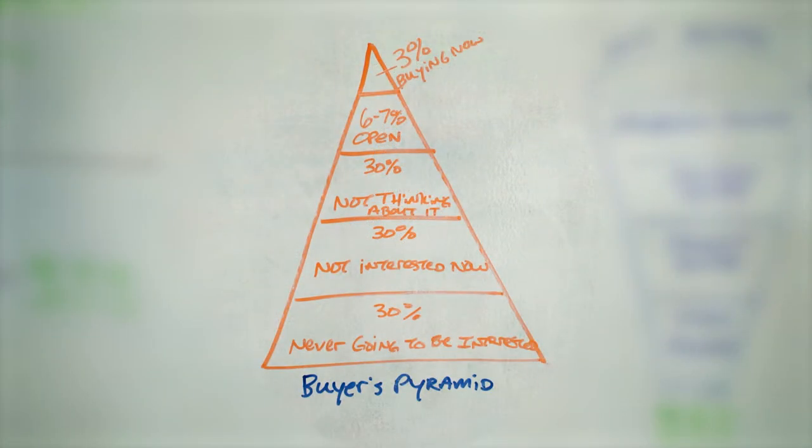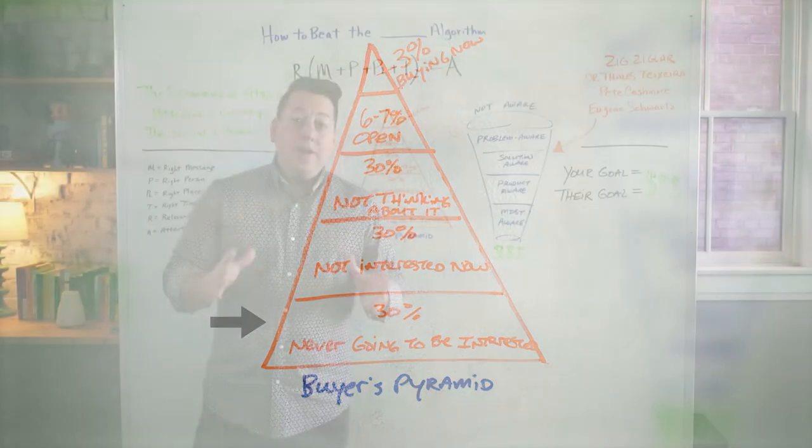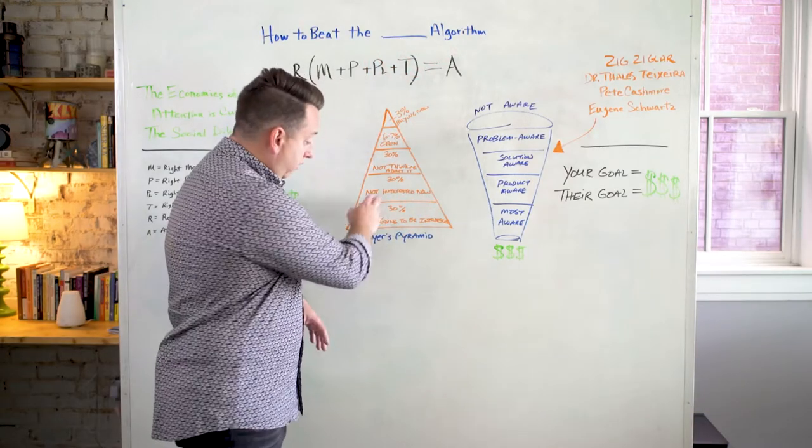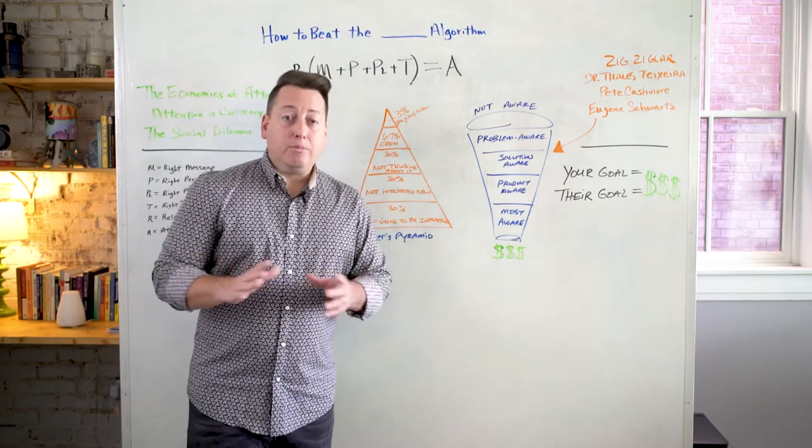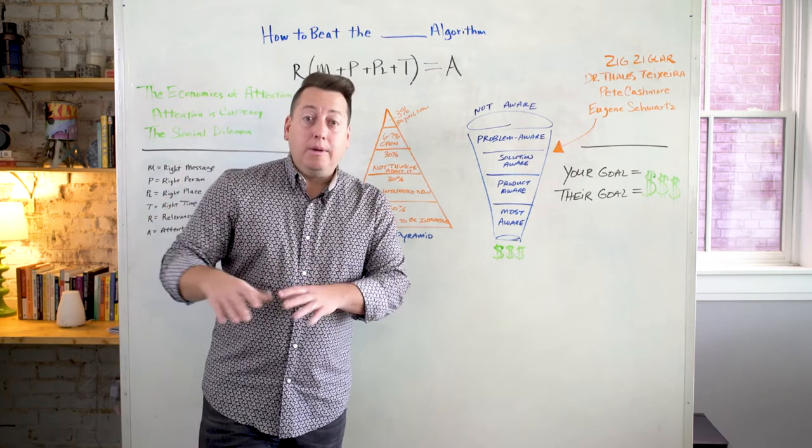One is the buyer's pyramid. Buyer's pyramid is super important because you have to remember that not everyone is a buyer right now. In fact, only 3% of people are buying now. 6% to 7% of people are open to it. 30% aren't thinking about it right now. But as soon as you can get them to think about it, then guess what? They're going to be a potential buyer. 30% are not interested right now because they don't know they have a problem that you can solve. And 30% aren't interested now and they'll never going to be interested because they're just not your buyer. So what you have to do is you just have to cross these people off of your list and promise that you're not going to try to create solutions for them. They're just not your buyer.